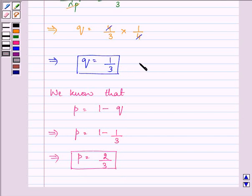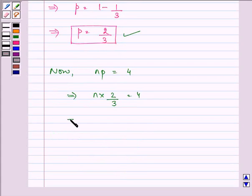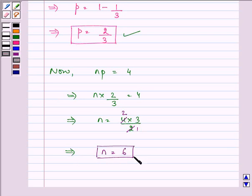Now, we have the value of q as well as p, so we can find out the value of n. We know that mean, that is np is equal to 4. This implies n into 2/3 is equal to 4. So this further means n is equal to 4 into 3/2, which gives us the value of n as 6.